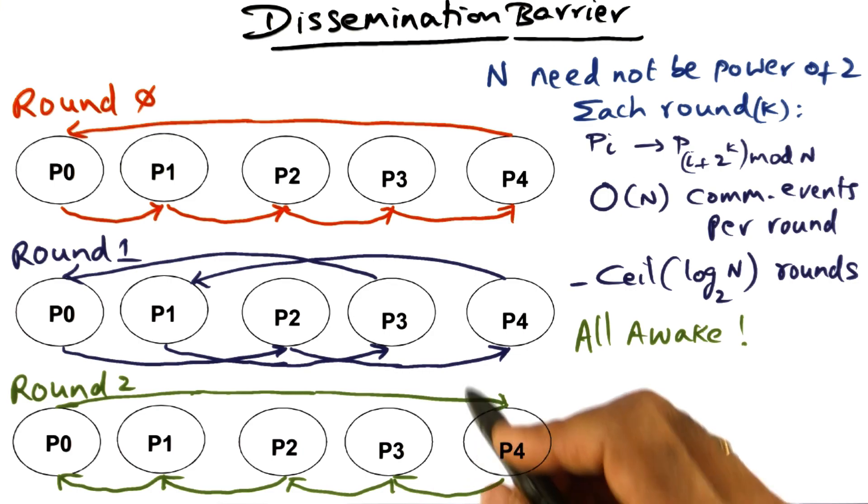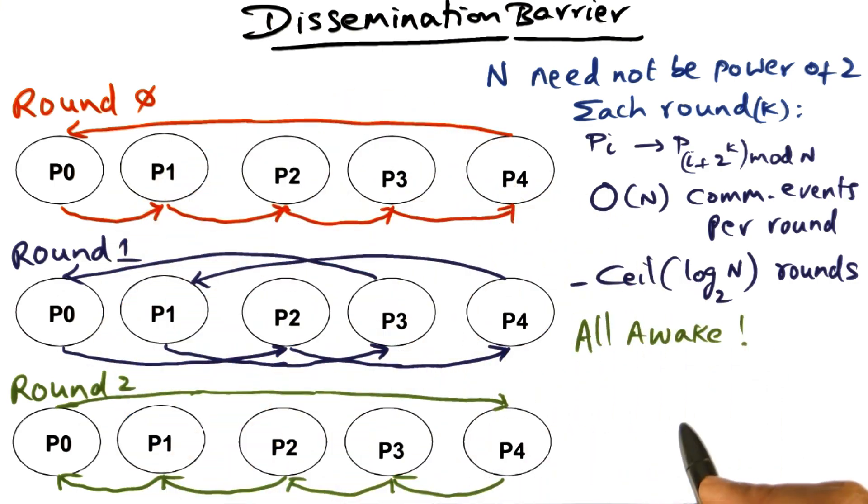In the dissemination barrier, because it is happening by information diffusion, at the end of a ceiling of log n rounds, everybody has heard from everyone else in the entire system. So everyone knows that barrier has been reached.